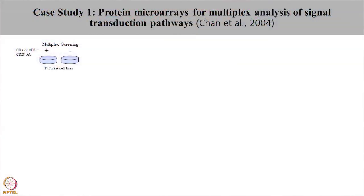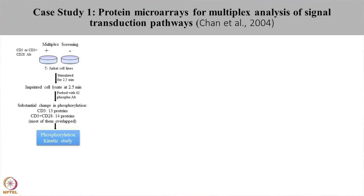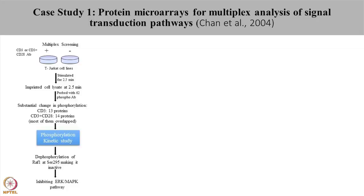To further understand the signaling events in T cells, Chan et al. activated Jurkat T cell lines with CD3 antibody and with CD3 and CD28 antibody in combination. These cell lysates were stimulated for 2.5 minutes and imprinted in 6 replicates onto nitrocellulose membrane coated slides. The phosphorylation status for 62 proteins were studied using phosphoantibodies. Upon activation with CD3, 13 proteins showed a substantial change in phosphorylation. When the cells were stimulated using CD3 and CD28, 14 proteins showed change in phosphorylation with most showing overlap. In this study, they identified that the RAF1 protein showed dephosphorylation upon stimulation with the antibodies.